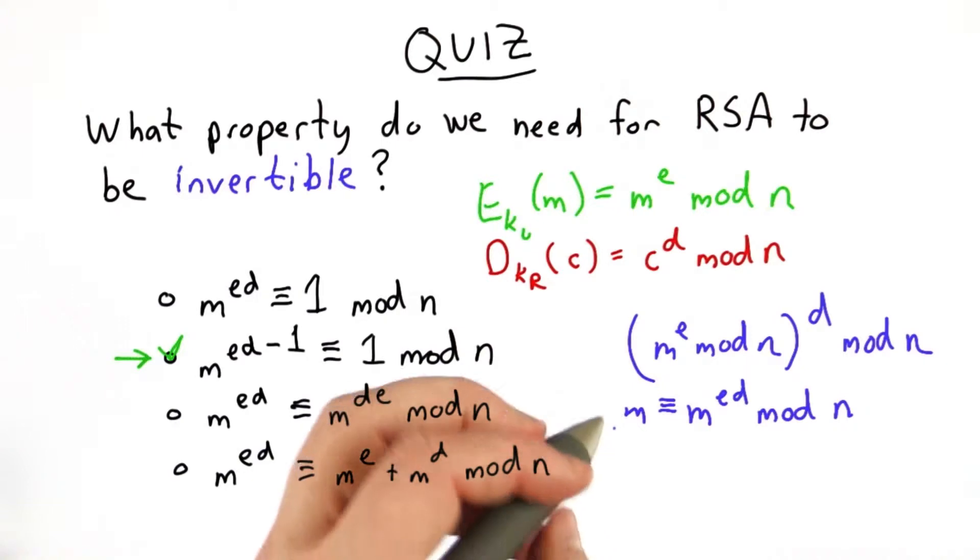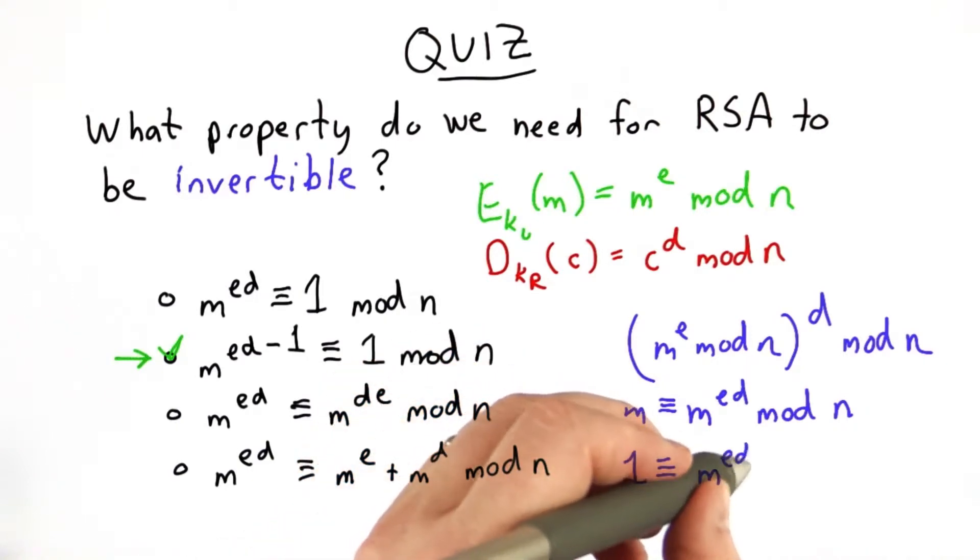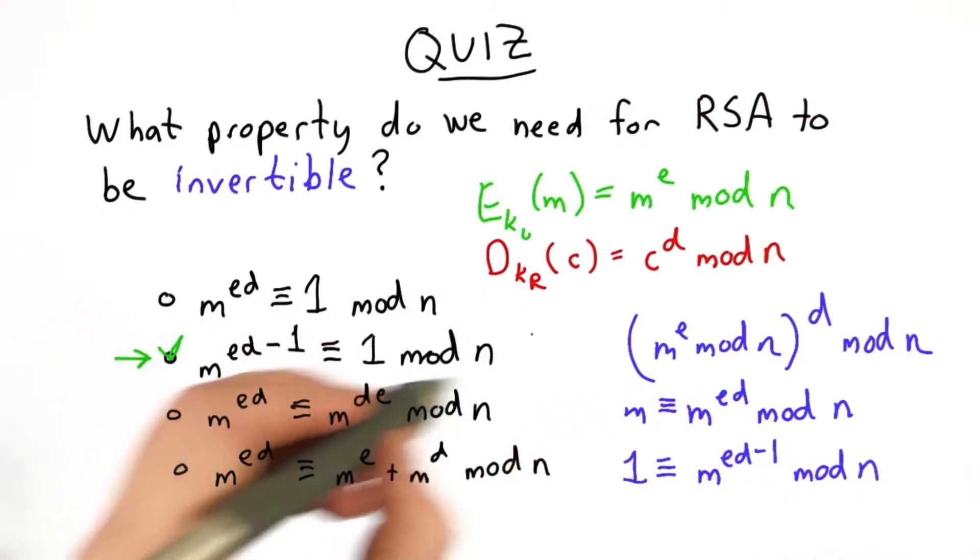If we divide both sides by m, this becomes 1. This becomes m to the ed minus 1. We've reduced the power by 1 because dividing by m. So this is the property we want.